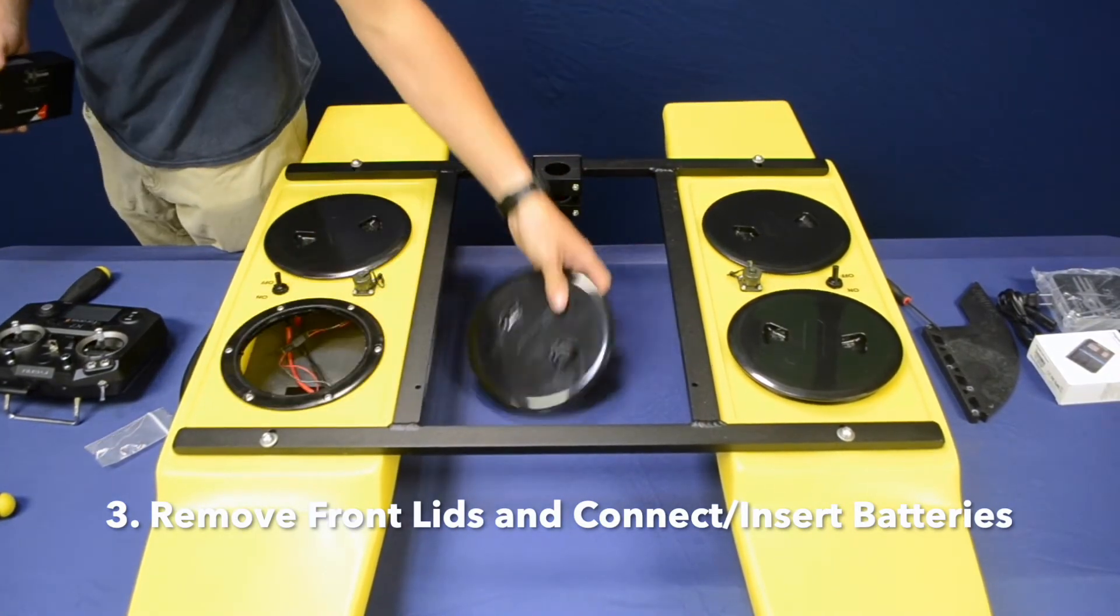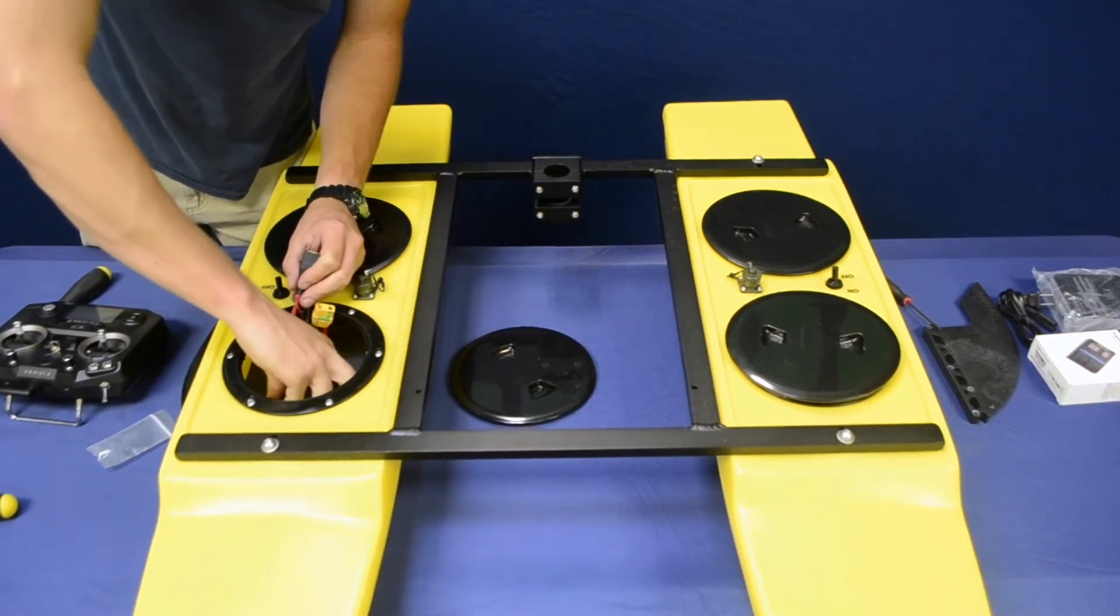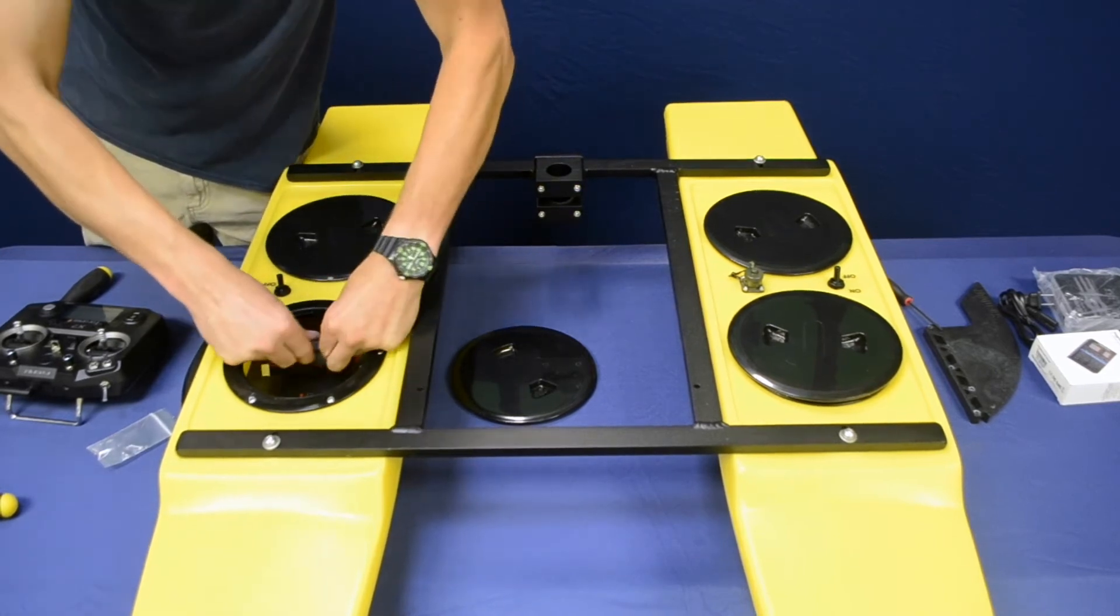Once you're done, you'll close up the lids, same way you took them off, and you can use a hatch wrench if you need to to tighten them down all the way. Otherwise, it'll just be hand tightening, no special tools required.